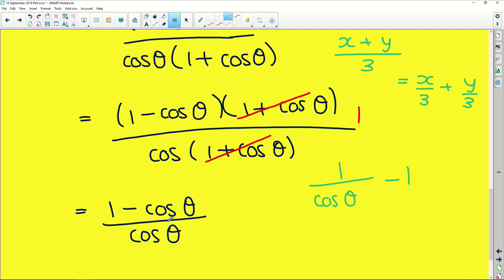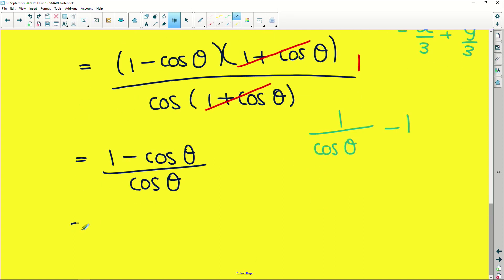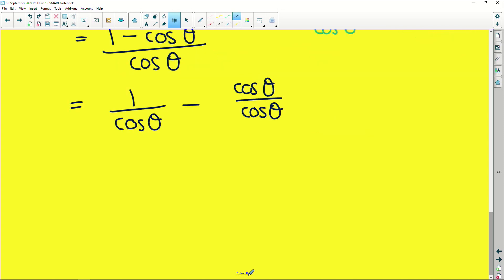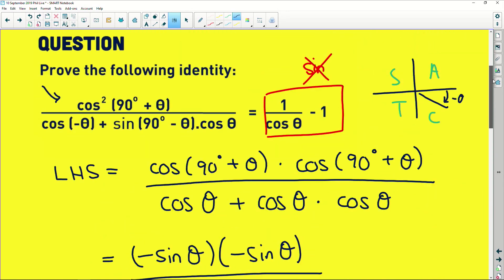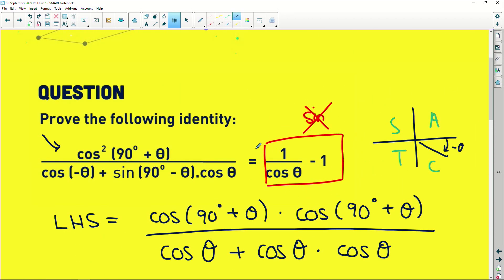So if I apply that logic to this fraction over here, this is the same as saying 1/cos(θ) - cos(θ)/cos(θ). And now we are getting exactly to where we need to be on the right-hand side. If we simplify, 1/cos(θ) remains the same. And anything divided by itself is 1. And that is exactly what we needed to find right at the beginning here.